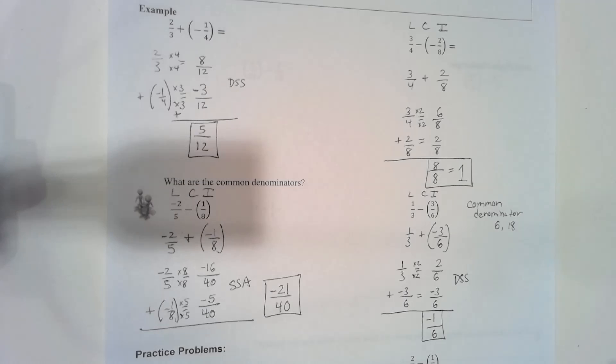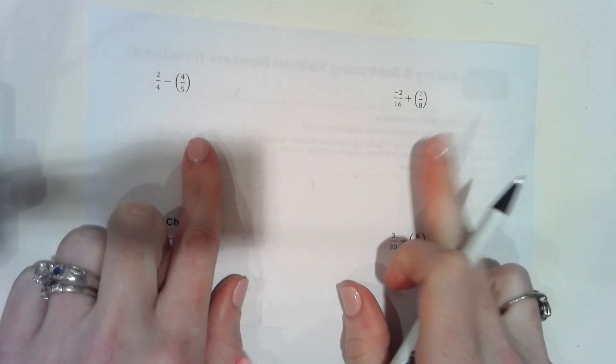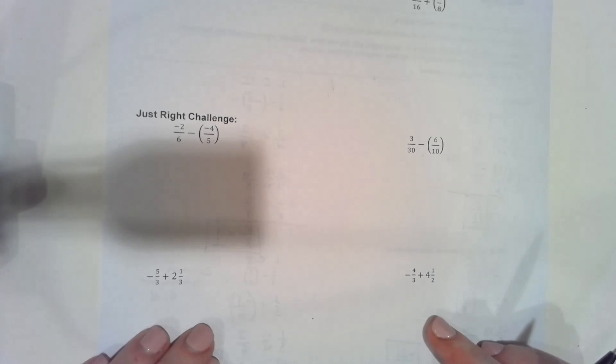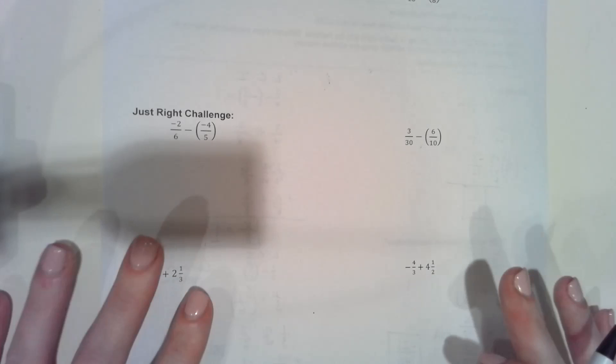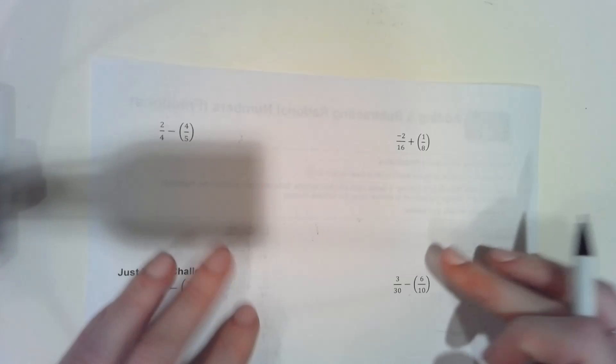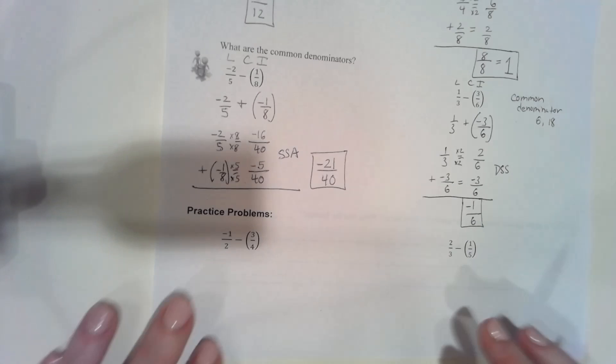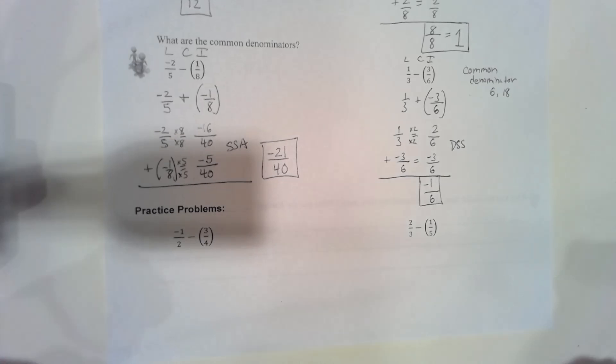Now there are practice problems — two on the front and two more on the back. There are also just-right challenge problems. If you're up for a challenge, do those four. If you want more basic practice, do the first four. You can work with a partner. Pause the video, get practicing, and when you come back I'll go over all the questions. The teacher also has an answer key if you need it.